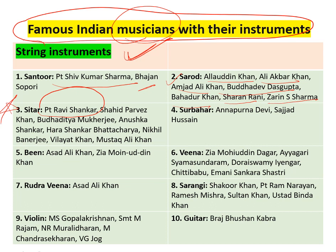Surbahar: Annapurna Devi, Sajjad Hussain. Been (Rudra Veena): Asad Ali Khan is very important. Veena: Ziya Mohiuddin Dagar, Ayyagari Doraeswami Ayyangar, and Chitti Babu — Chitti Babu's name is very famous in connection with Veena. Rudraveena: Asad Ali Khan. Sarangi: Shakur Khan, Pandit Ram Narayan, Sultan Khan, and Ustad Binda Khan.